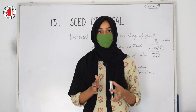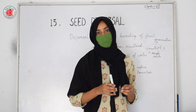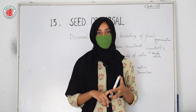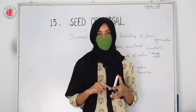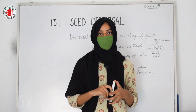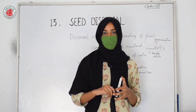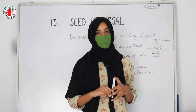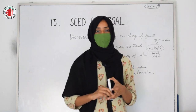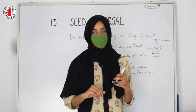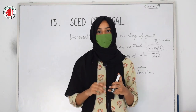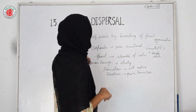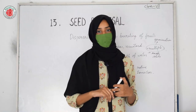This concludes the lesson on seed dispersal. We have seen how seeds spread from one place to another through different agents: wind, water, human beings, bursting of fruits, and birds and animals. Seed dispersal is a very important process because after dispersal, seeds can germinate and we can find different plants growing at distant places. That's all for today — meet you in the next class, thank you.